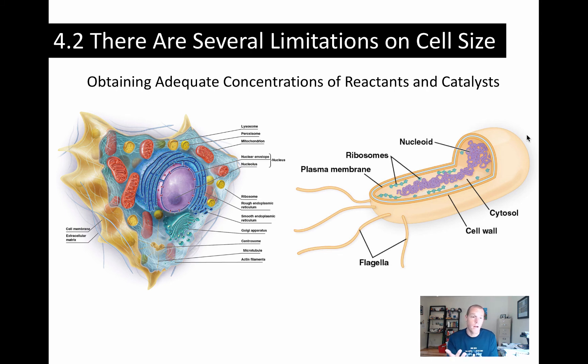Compartmentalization is things like having mitochondria, for plant cells chloroplasts. And this cell and plant cells, Golgi, endoplasmic reticulum, peroxisomes, lysosomes, all kinds of structures which allow us to concentrate reactants so that biochemistry can occur.